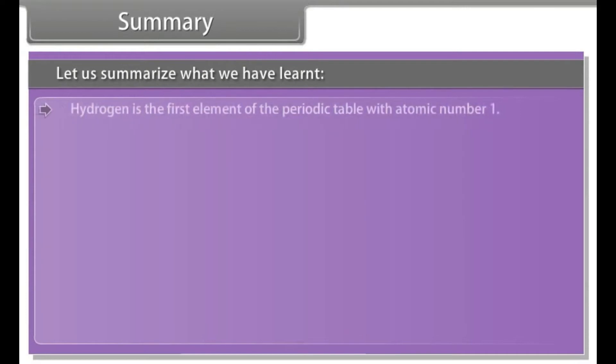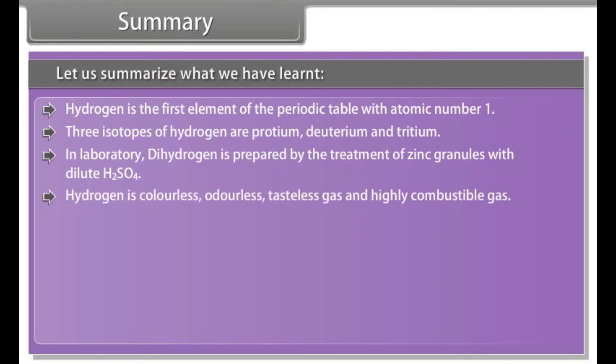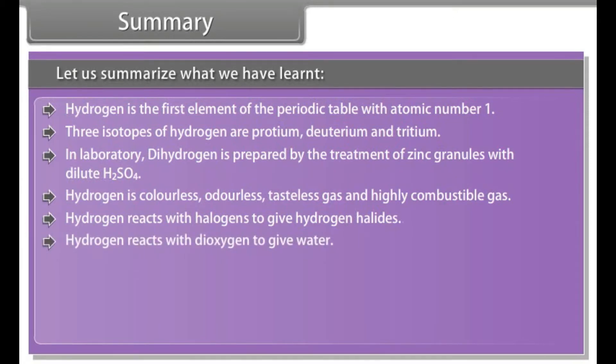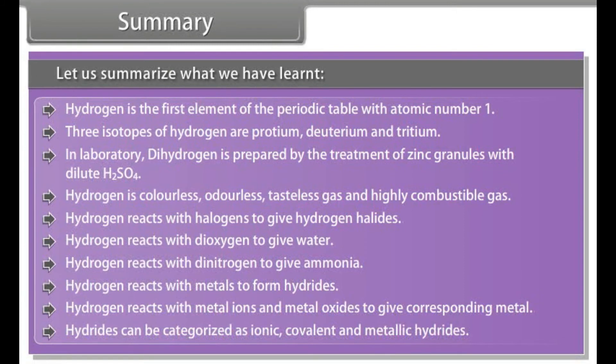Summary. Let us summarize what we have learnt. Hydrogen is the first element of the periodic table with atomic number 1. Three isotopes of hydrogen are Protium, Deuterium and Tritium. In laboratory, dihydrogen is prepared by the treatment of zinc granules with dilute sulfuric acid. Hydrogen is colorless, odorless, tasteless gas and highly combustible gas. Hydrogen reacts with halogens to give hydrogen halides. Hydrogen reacts with dioxygen to give water. Hydrogen reacts with dinitrogen to give ammonia. Hydrogen reacts with metals to form hydrides. Hydrogen reacts with metal ions and metal oxides to give corresponding metal. Hydrides can be categorized as ionic, covalent and metallic hydrides.